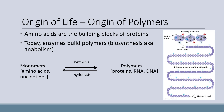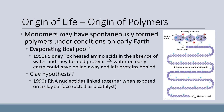Today, enzymes build polymers — meaning amino acids are made into bigger and bigger compounds. This is called biosynthesis or anabolism. But monomers like amino acids may have spontaneously formed polymers under the conditions on early Earth as well. This may have happened in an evaporating tidal pool. In the 1950s, Sidney Fox heated amino acids in the absence of water, and they formed proteins. So water on early Earth could have boiled away and left proteins behind. This process may have also happened on a clay surface — in the 1990s, RNA nucleotides were linked together when exposed on a clay surface, which acted as a catalyst.